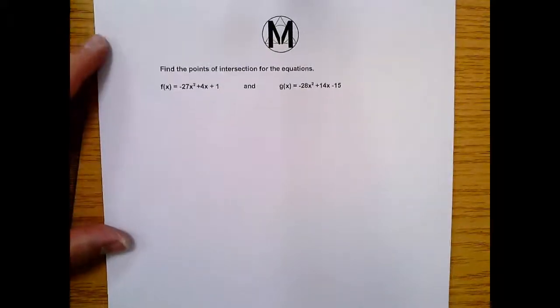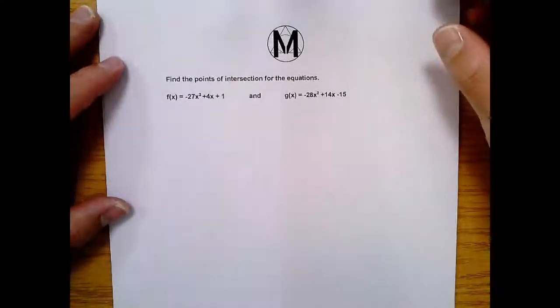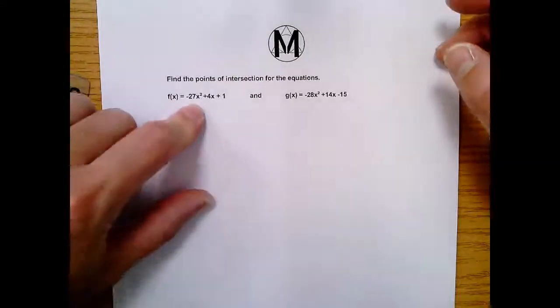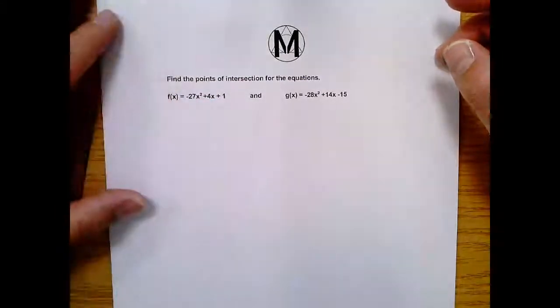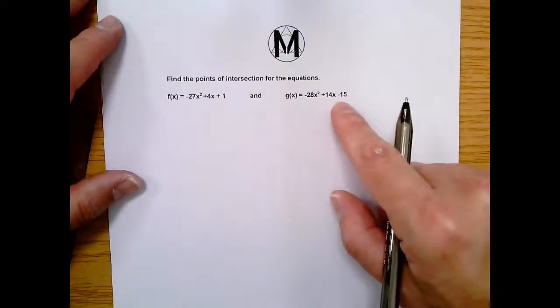All right, let's do some methodic math. Here we go. It says find the points of intersection for the equations: f(x) = -27x² + 4x + 1 and g(x) = -28x² + 14x - 15.